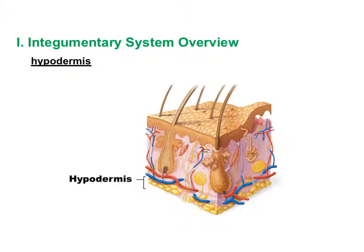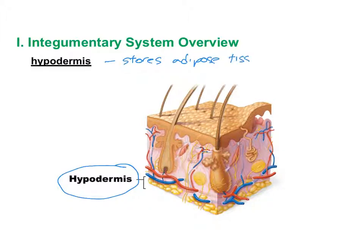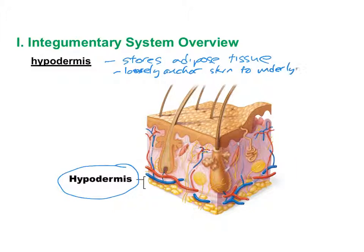The third layer is the hypodermis, which is not necessarily considered part of the integumentary system, but we'll discuss it because it's closely associated. The hypodermis is located below the dermis and is composed primarily of fat, storing adipose tissue. Its function is to loosely anchor the skin to the underlying tissue, which when we dissect cats you'll see is mostly muscle tissue.